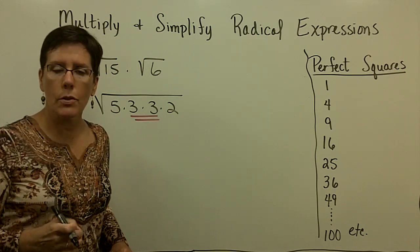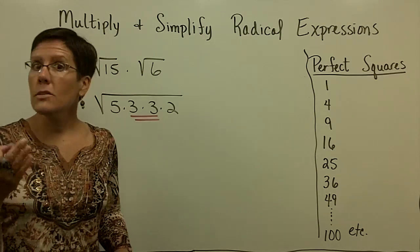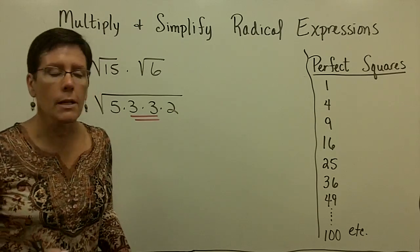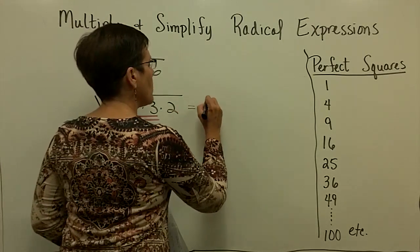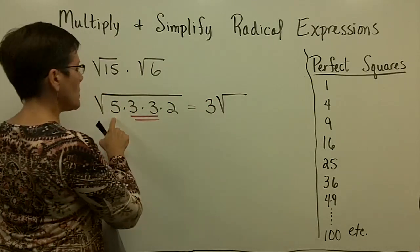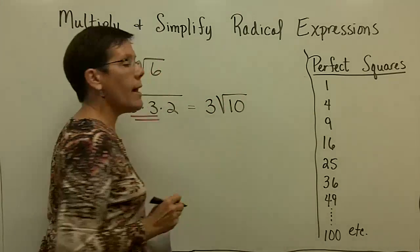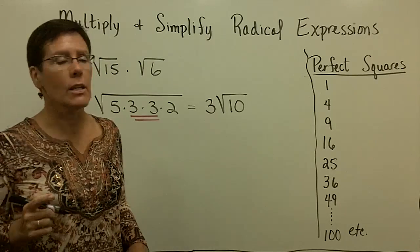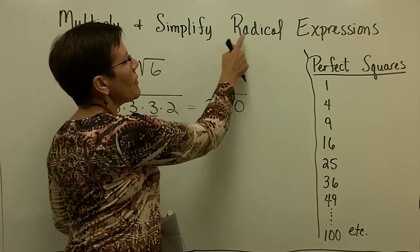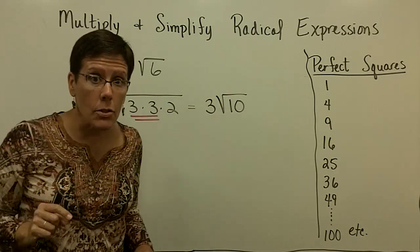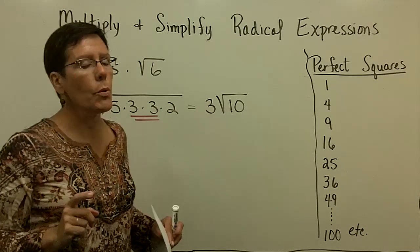So you've got those products broken into their prime factors, and we have learned that a pair of those can come out from underneath the radical, because the square root of 3 times the square root of 3 is the square root of 9, which is just 3. So that comes out in front, and this 5 times 2 is 10 under the radical. And what you are doing is simplifying that radical expression so that later you can add and subtract them. It's a really important piece.